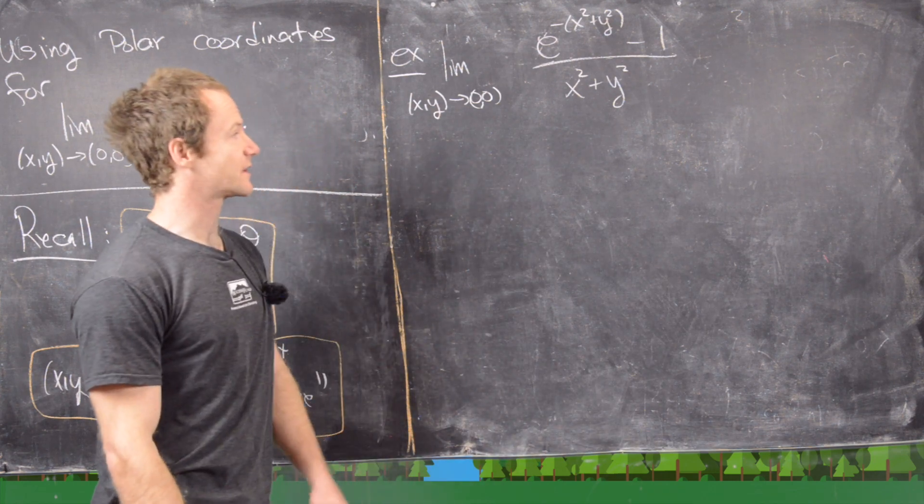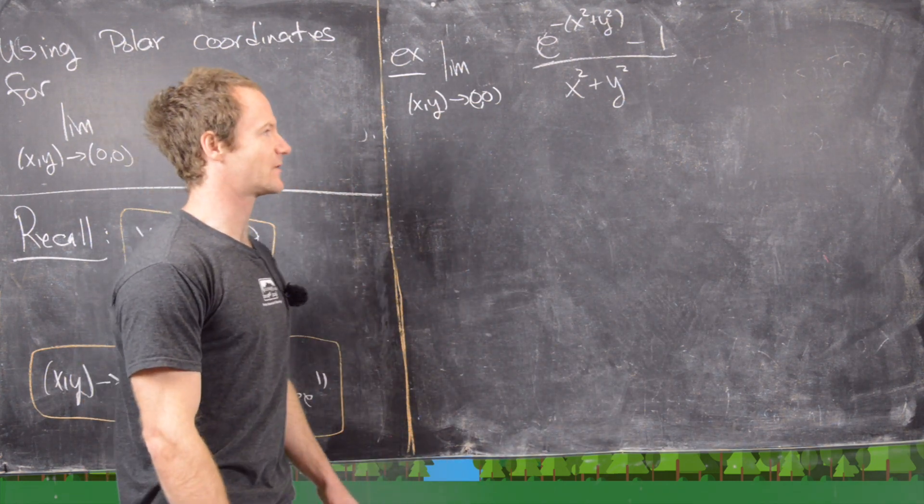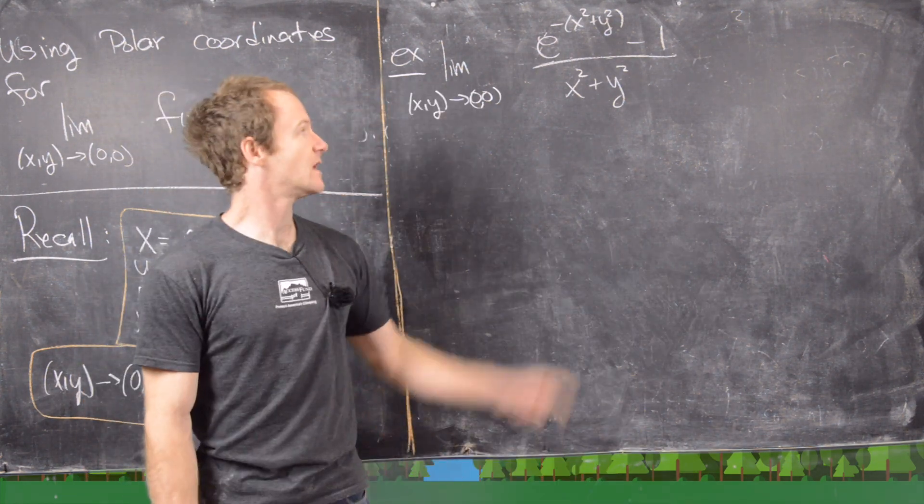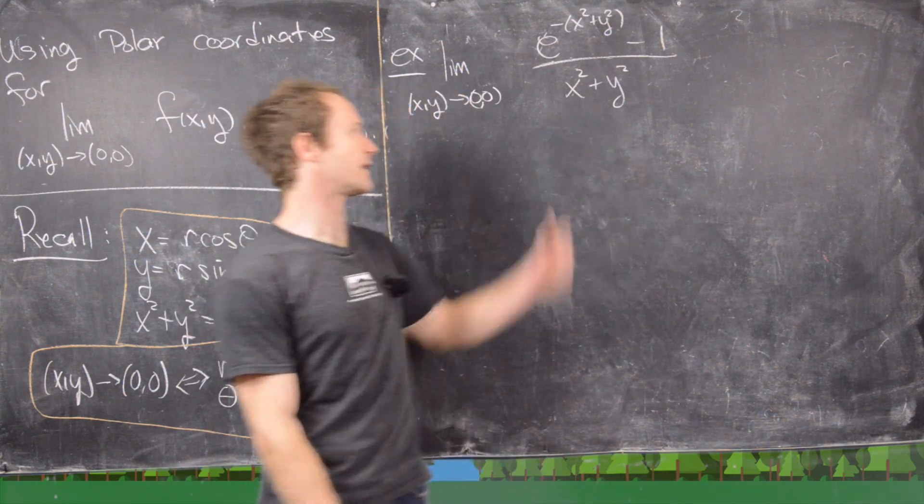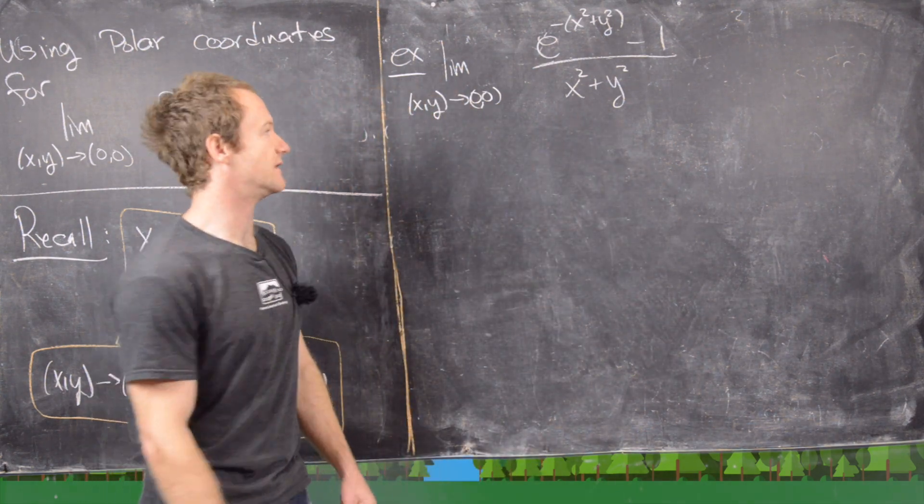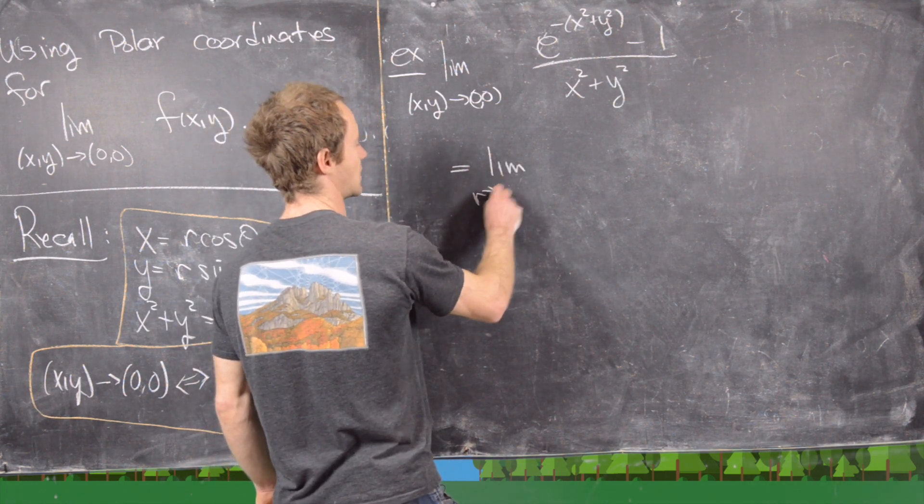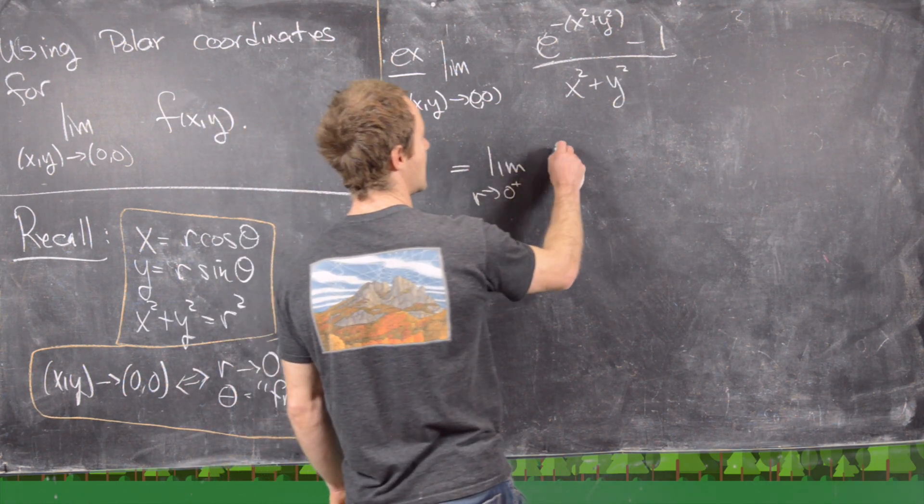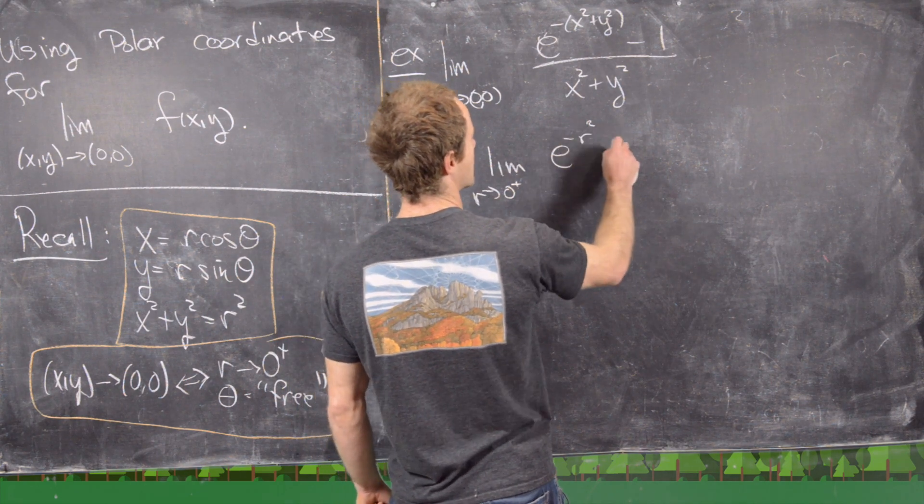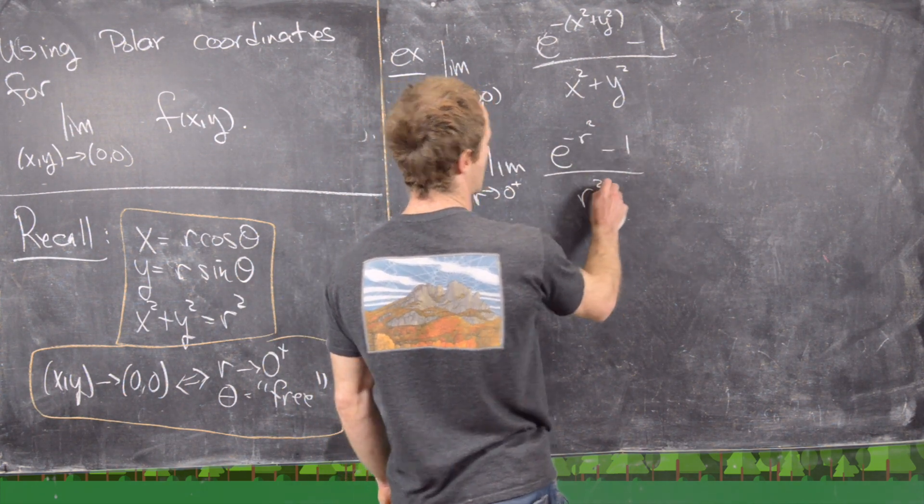So now let's look at this one. This is obviously set up for doing polar coordinates perfectly because x squared plus y squared is the only way that we see x and y in this limit. So here we get that this is the same thing as the limit as r goes to zero from the right of e to the minus r squared minus one over r squared.